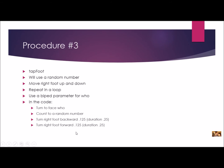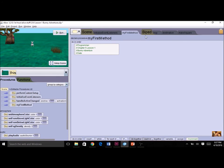For procedure number three, we're going to make the March Hare tap his foot. This time we'll use a random number. The right foot will move up and down, repeated in a loop using a random number. We'll use a biped parameter for 'who' because we want him to turn to face whoever he's tapping his foot for. In the code: turn to face 'who', count to a random number, then turn the right foot backward and forward for the tapping motion. I'll also change the duration.